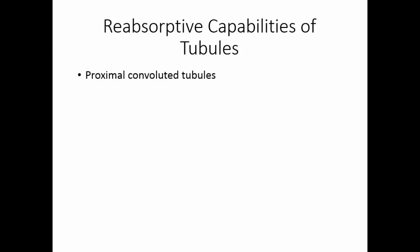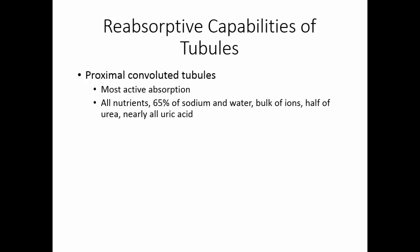The proximal convoluted tubules are the most active in reabsorption. All of the nutrients, 65% of the sodium and water, the bulk of ions, half of the urea, and nearly all of the uric acid that was in the filtrate will be reabsorbed here. The urea and the uric acid are unfortunate — we really want to get rid of them, but they passively get reabsorbed.